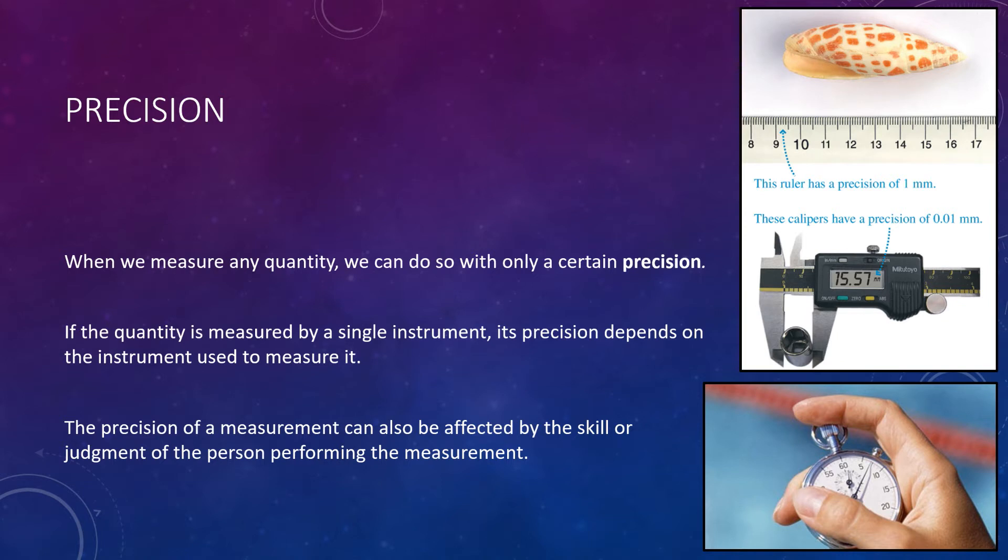Additionally, perhaps the user is using a stopwatch. The stopwatch might have a precision all the way down to 0.001 seconds. But, due to your reaction time, your measurement of this time of, say, a sprinter would actually be much less precise than that.